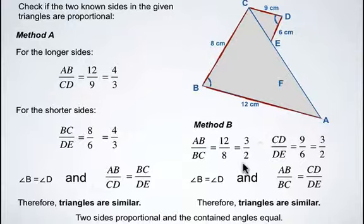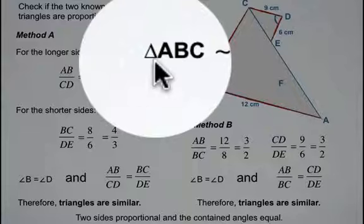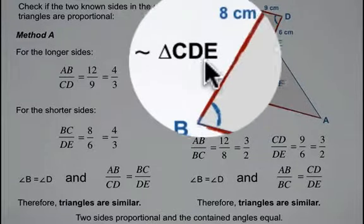So two sides proportional and the contained angles are equal. Therefore triangle ABC is similar to triangle CDE.